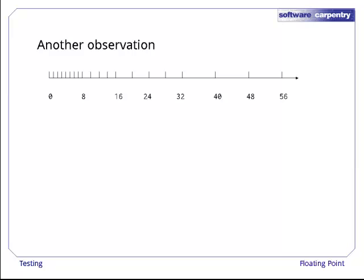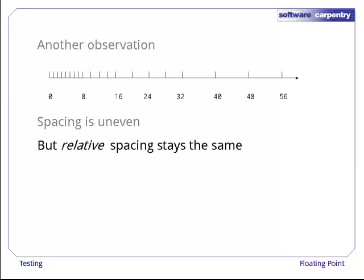Instead, here's another observation about our uneven number line. The spacing between the values we can represent is uneven. However, the relative spacing between each set of values stays the same. The first group is separated by 1, then the separation becomes 2, then 4, then 8, so that the ratio of the spacing to the values stays roughly constant. This happens because we're multiplying the same fixed set of mantissas by ever larger exponents, and it points us at a couple of useful definitions.